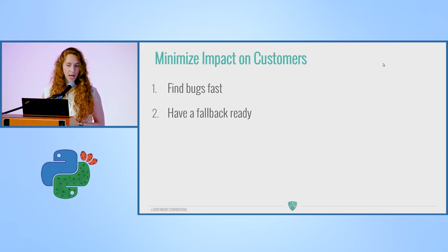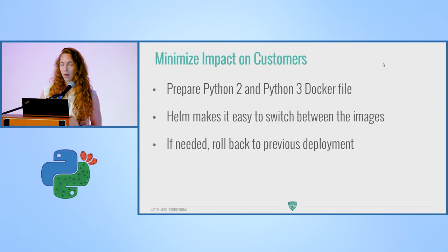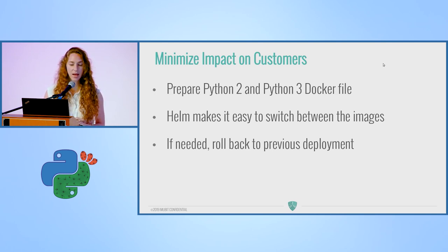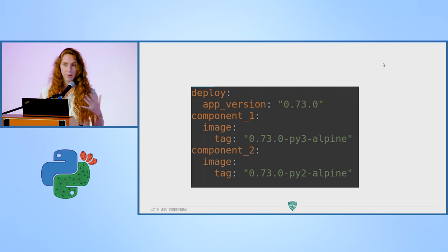To minimize impact on customers: find bugs fast using logs and alerts on your cloud applications. Have a fallback ready. We had Python 2 and Python 3 Docker files, and using Helm made it easy to switch between images — if needed, we could just roll back to the previous deployment. In the Helm example shown, images are tagged Python 2 or Python 3, so just switch the tag to revert.